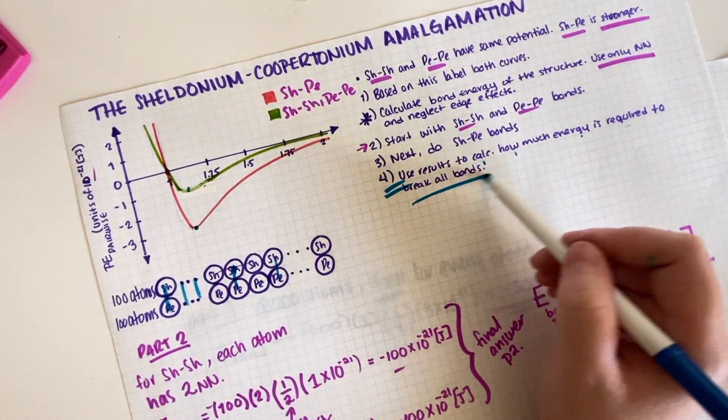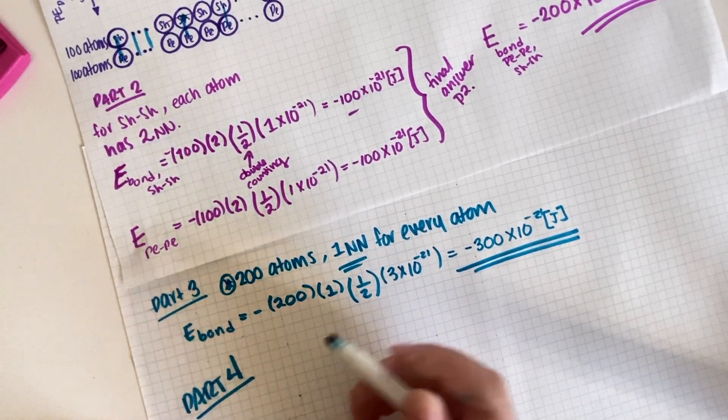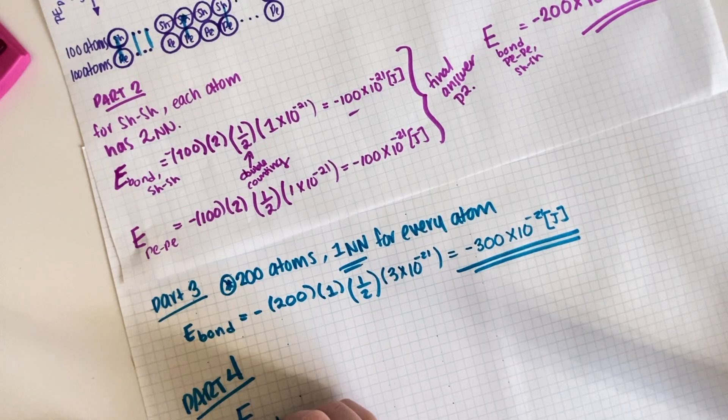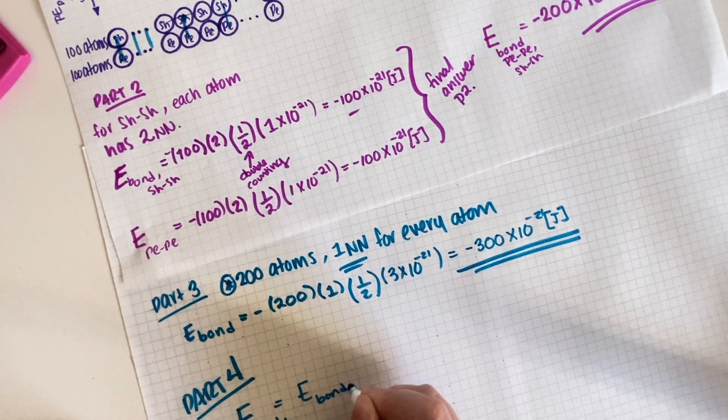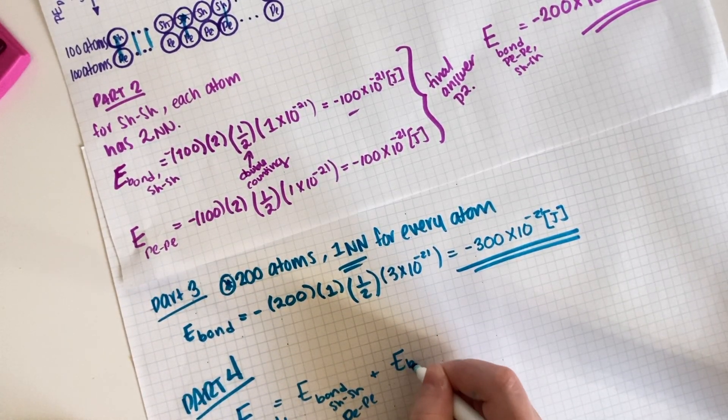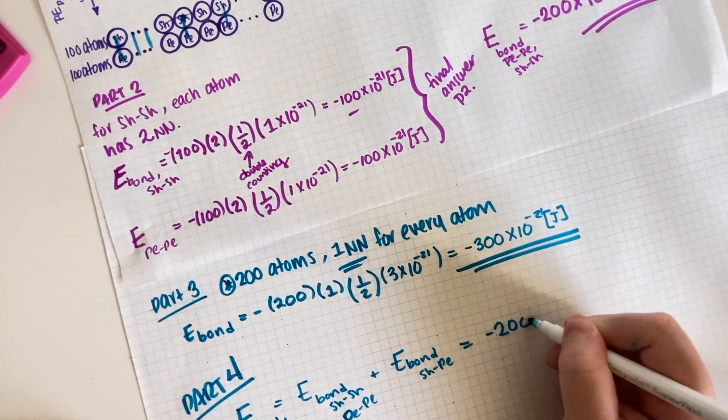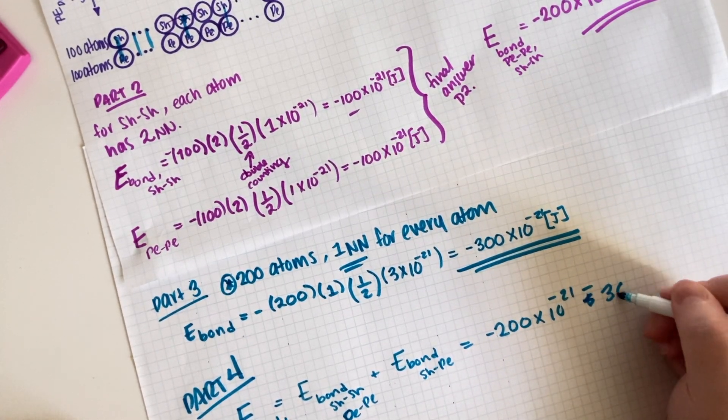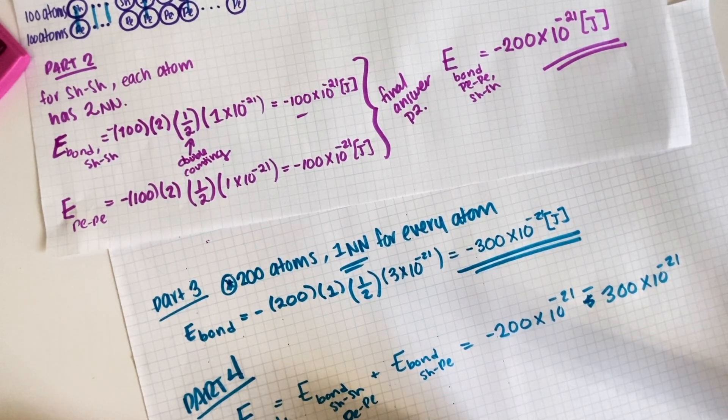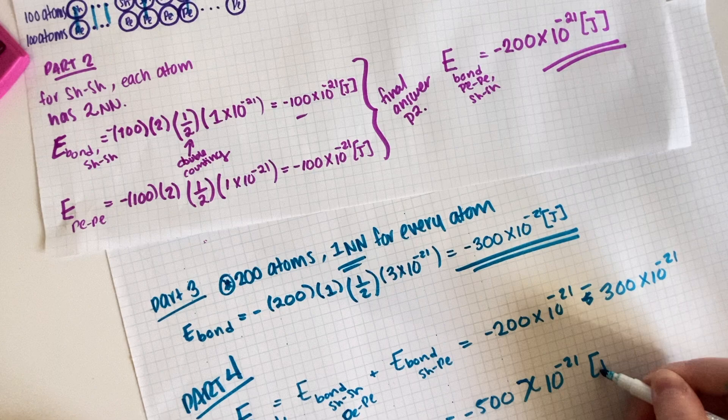And then part four is saying use results to calculate how much energy is required to break all bonds. So part four it's actually very easy because it's just the addition. So the energy bond total would be the energy bond of the likewise—the Sheldonium-Sheldoniums—plus the E_bond of the different ones, Sheldonium-Coopertoniums. So this is negative 200 times 10 to the negative 21 plus negative 300 times 10 to the negative 21. These are just my answers for part B and part C. So E_bond total is equal to negative 500 times 10 to the negative 21 joules, final answer.